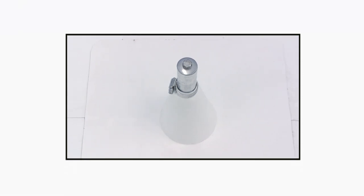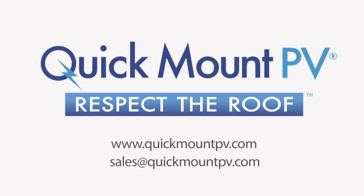This concludes our brief demonstration of how to install Quick Mount PV's low-slope mount on an insulated membrane roof with a corrugated steel substrate. For more information on the low-slope mount and all Quick Mount PV products, please visit our website.